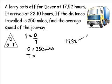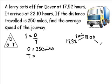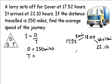From 17:52 hours, I take it up to the nearest whole hour which is 18:00 hours — that's a difference of 8 minutes. From 18:00 hours to the arrival time of 22:10 hours is a difference of 4 hours and 10 minutes. So the total time taken for the journey is 4 hours and 18 minutes.